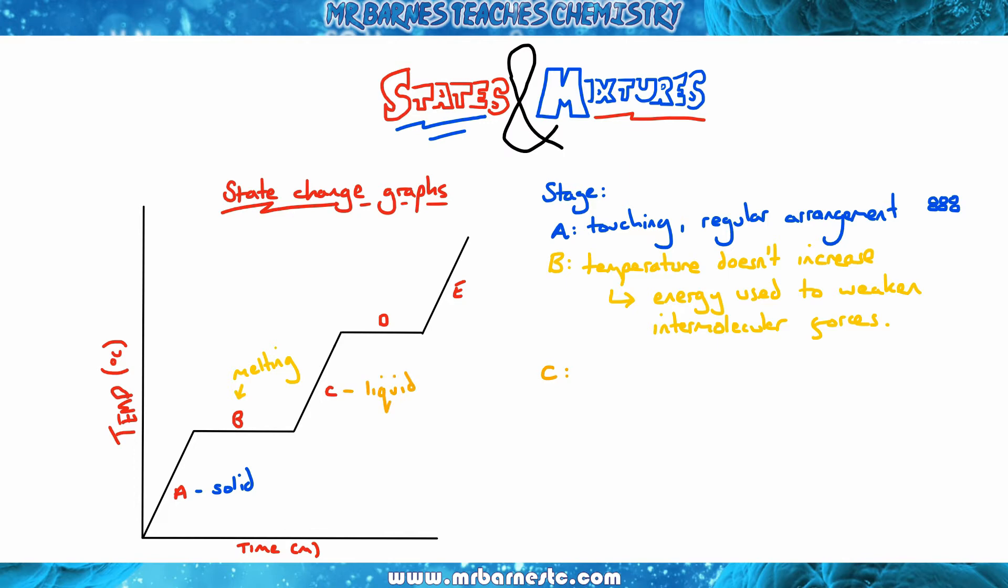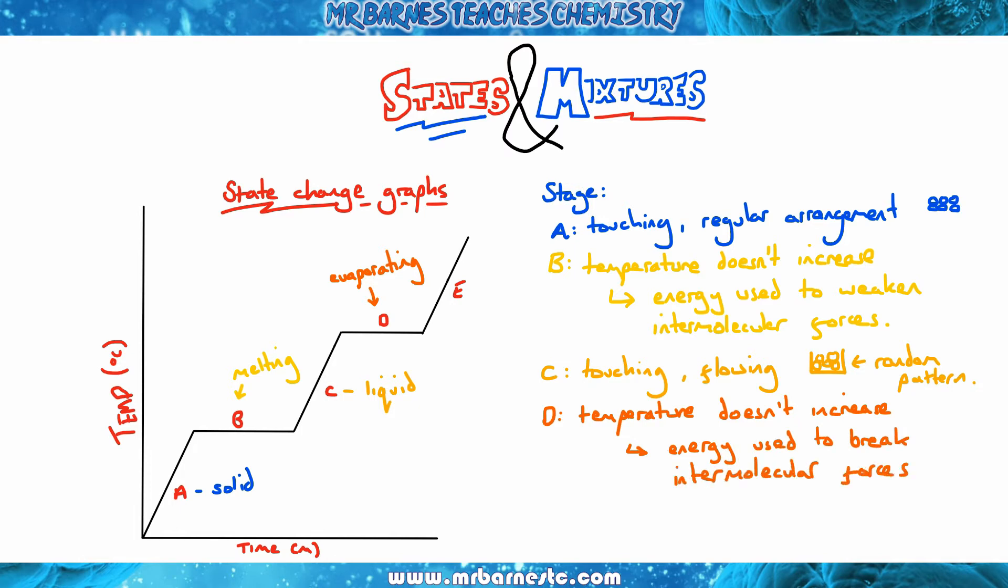At section C, it's now liquid, so the particles are still touching, they're flowing past each other, and it's taking the shape of the container. At D, it's evaporating. The temperature stays the same because energy is being used to completely break your intermolecular forces. At stage E, it's your gas—far apart with random movement.